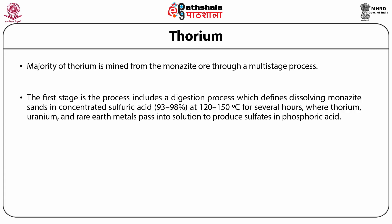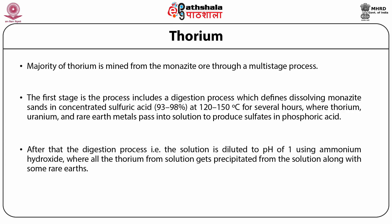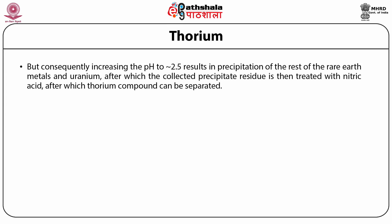Thorium, uranium and rare earth metals pass into the solution to produce sulfates in phosphoric acid. After the digestion process, the solution is diluted to a pH of 1 using ammonium hydroxide, where all thorium precipitates from the solution along with some rare earth metals. Subsequently, increasing the pH to around 2.5 results in precipitation of the remaining rare earth metals and uranium, after which the collected precipitate residue is treated with nitric acid to separate the thorium compound.